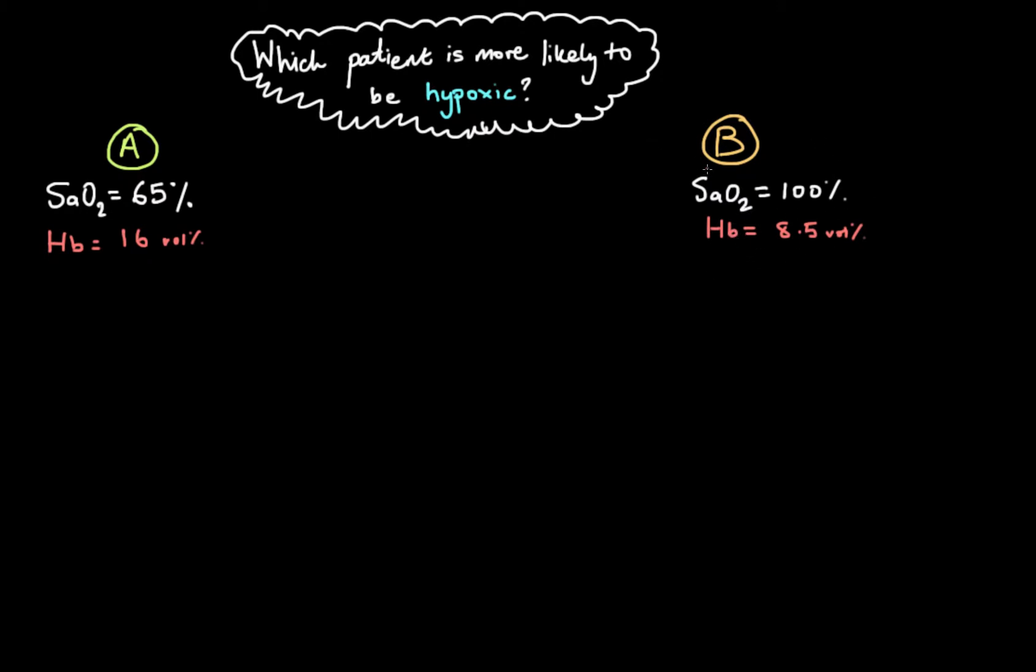So based purely on their SATs we would say maybe that patient B is more oxygenated and patient A is more likely to be hypoxic. So if you thought that was the answer then keep watching. Maybe pause the tape and see if you can figure out who is actually more likely to be hypoxic.